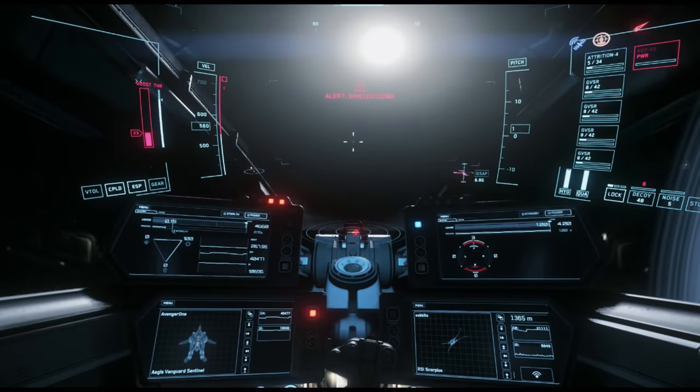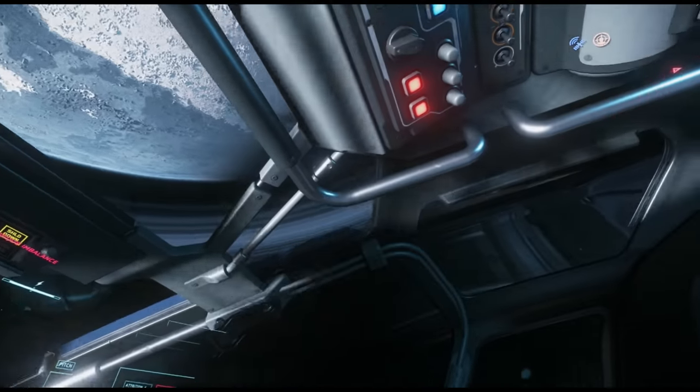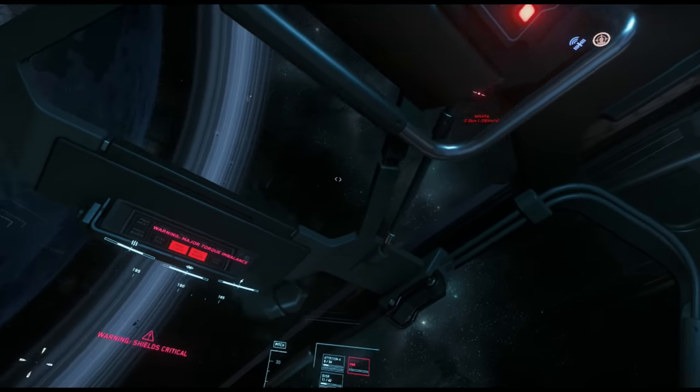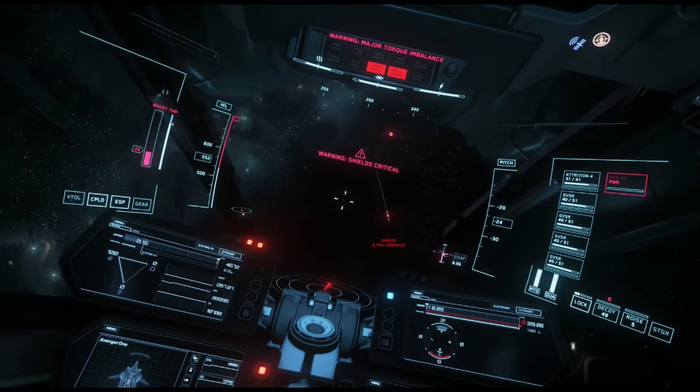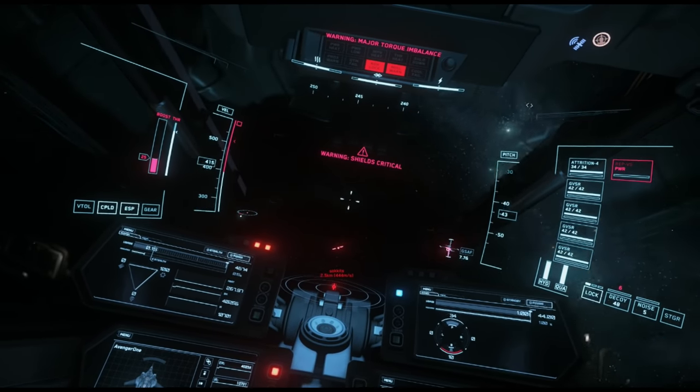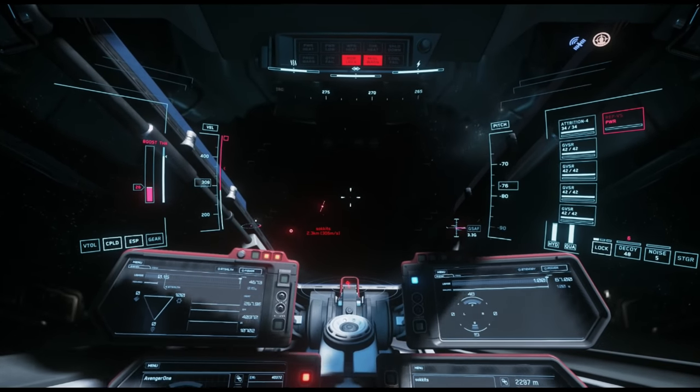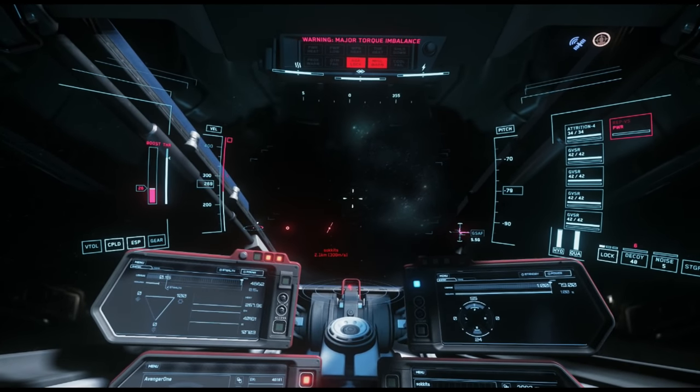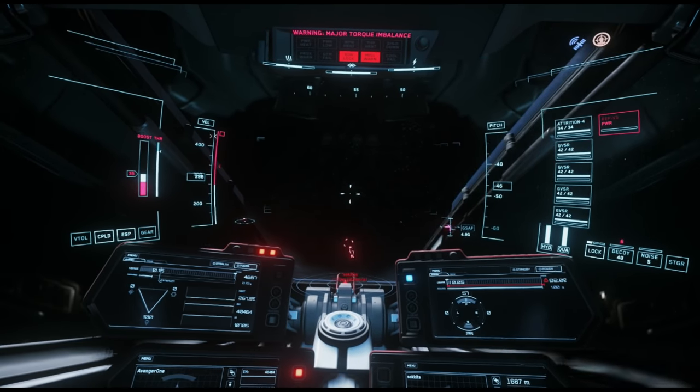On top of that, the issue with fixed assist, which you can see illustrated here, even against something physically large like a Vanguard, as long as I'm maintaining a proper corkscrew, maintaining good thruster control. If I'm outside of that kind of 500 meter cone that the Scorpius is engaging me at, then you'll see a lot of these tracers are not even touching me until I get within that 500 meter kind of distance.